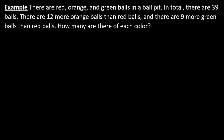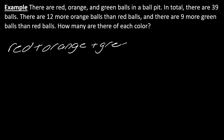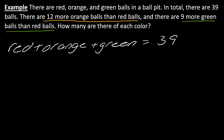There are red, orange, and green balls in a ball pit, and in total there are 39 balls. There are 12 more orange balls than red balls. There are 9 more green balls than red balls. How many are there of each color? Figure out where the equal sign would naturally fall. If I combine the three ball types, that comes out to 39 — so there's where the equal sign falls. The orange balls are expressed in terms of the red balls, and the green balls are expressed in terms of the red balls. Since everything else is expressed in terms of red, the red balls are going to be represented by X.